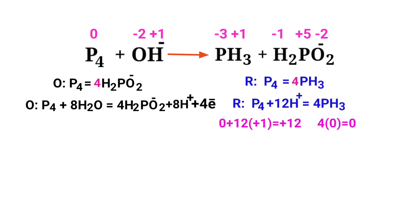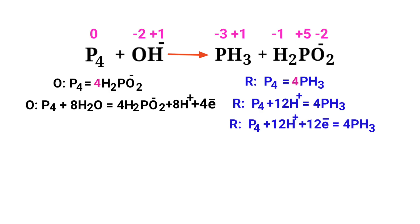Both sides of the reduction half reaction are not equal. Add 12 electrons to the left side to make it equal to zero. The addition of charges are now equal in the reduction half reaction.